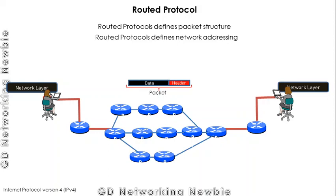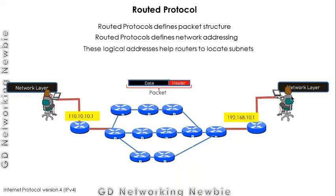The second job of routed protocol is that it defines network addressing — the logical addressing which we call IP addressing. In IPv4, this is a 32-bit address. This provides addresses to the nodes. As you can see, this interface and this node will all have a logical address. These logical addresses actually help routers to locate subnets. If you don't have these logical addresses, the router will have no hint about where to send the data.